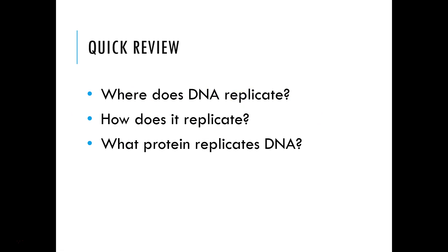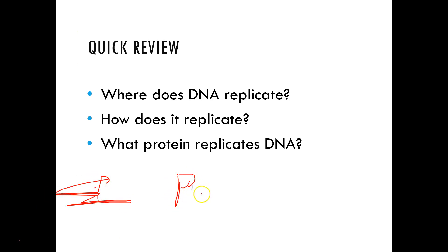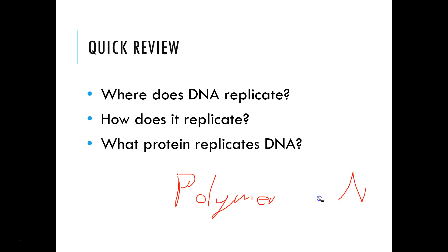DNA always, and only ever, is found inside of the nucleus, so it must replicate inside the nucleus. If DNA is outside of the nucleus, something bad has happened. DNA replicates through a semi-conservative, semi-discontinuous method — review the Meselson-Stahl experiment for more on semi-conservative replication. The protein that makes a polymer of DNA is DNA polymerase. DNA polymerase is the enzyme that makes a polymer out of DNA.